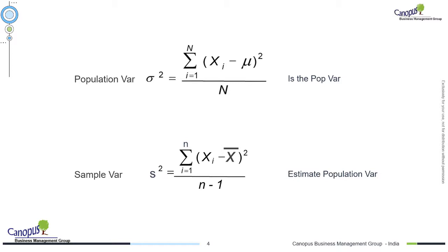If you want to estimate the population standard deviation or variance without collecting data of the entire population, then you can do sampling. When you do sampling, you need to make a small correction in the formula. You use N minus 1 in the denominator with a small n, which represents the sample. N minus 1 is a correction factor to ensure we are actually estimating the population's characteristic and not merely computing the value for the sample alone. We also use the sample mean, denoted x-bar, since we don't know the population mean mu.